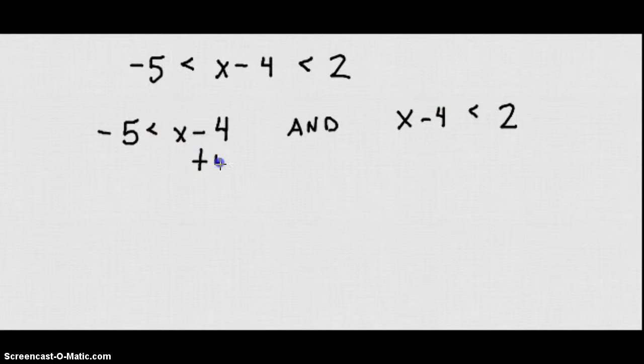So we are going to add 4 to both sides. We get negative 1 is less than x. And on this side we are going to add 4 to both sides. We get x is less than 6.